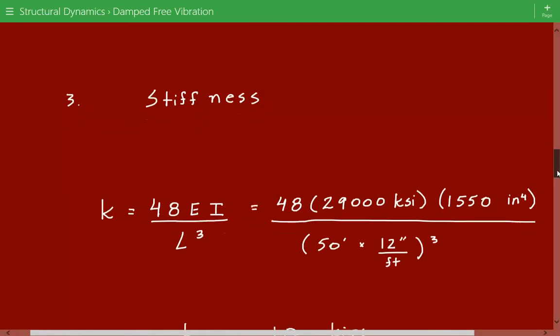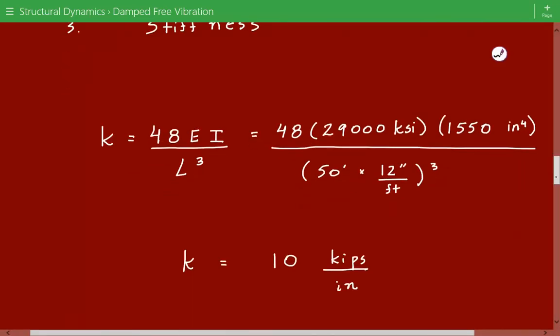So that comes out to be, and the moment of inertia, we can get that from, you should just search that online, or you can check that out in the steel manual if you need it. And also don't forget to multiply the length over here by 12 inches to get it into inches. So the stiffness is equal to 10 kips per inch.